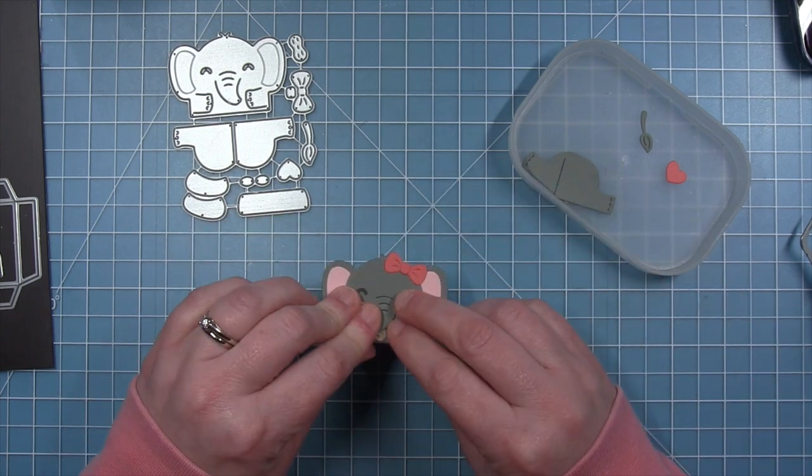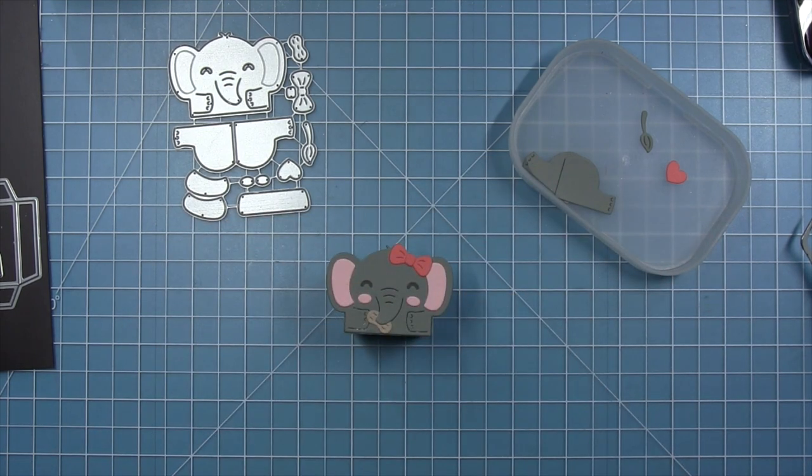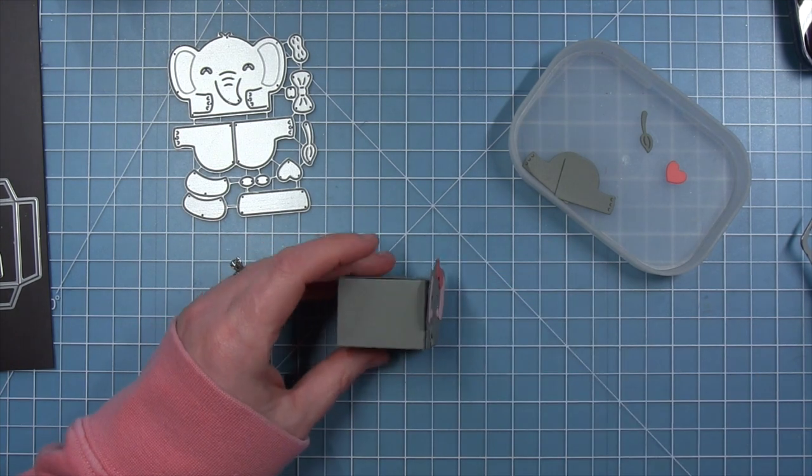And then I'm just going to add this to the front of my box. There's also a little heart that the elephant could hold in its trunk or its hands.